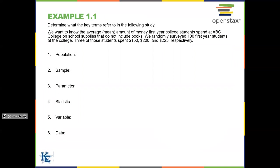We're going to do a few examples to get used to using these words appropriately. Determine what the key terms refer to in the following study: we want to know the average amount of money first year college students spend at ABC College on school supplies not including books. We randomly surveyed 100 first year students at the college; three of those students spent $150, $200, and $225 respectively. Our population is all first year college students at ABC College.